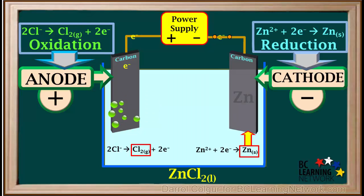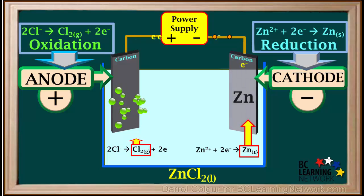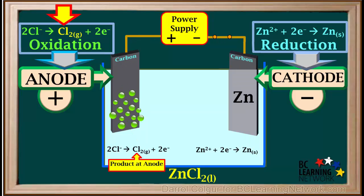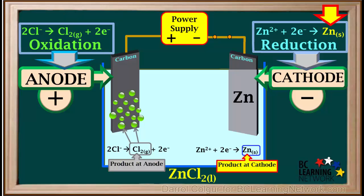So again, zinc ions are reduced at the cathode to form zinc atoms, and chloride ions are oxidized at the anode to form chlorine gas, Cl2. As the cell operates, we can visualize zinc metal growing on the surface of the cathode and bubbles of chlorine gas forming on the anode. So we can say that the product at the anode is chlorine gas, and the product at the cathode is zinc metal.